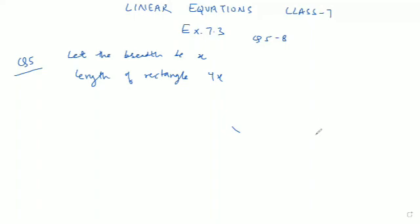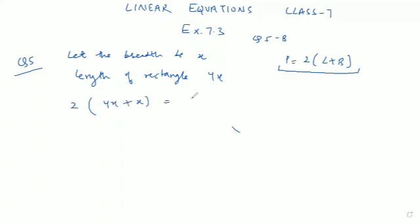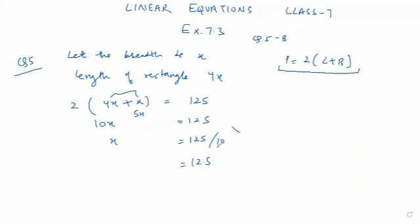4x means 4 times. Now, according to the question, the perimeter of a rectangle is equal to 2 into (l + b). We will apply that formula here. So 2 into (length 4x + breadth x) equals 125, which is given to us. Multiply it: 4x plus x becomes 5x, and 2 into 5x equals 10x. So 10x equals 125, meaning x equals 125 divided by 10, which is 12.5 meters.